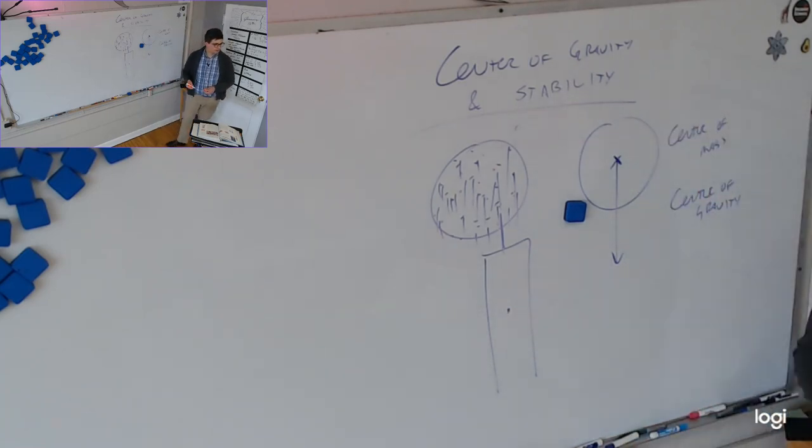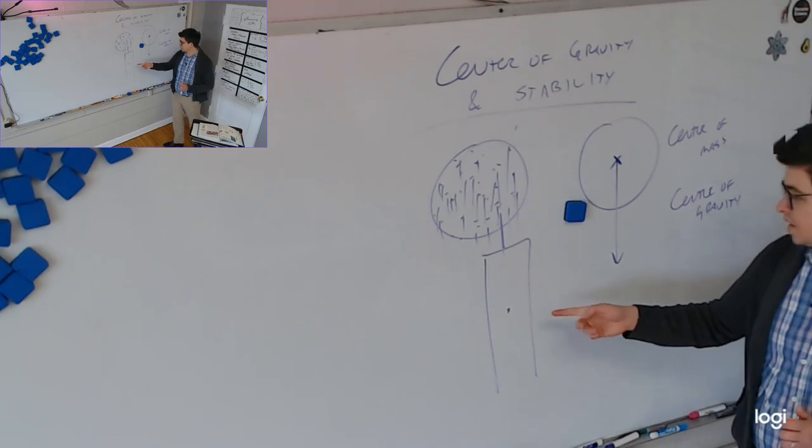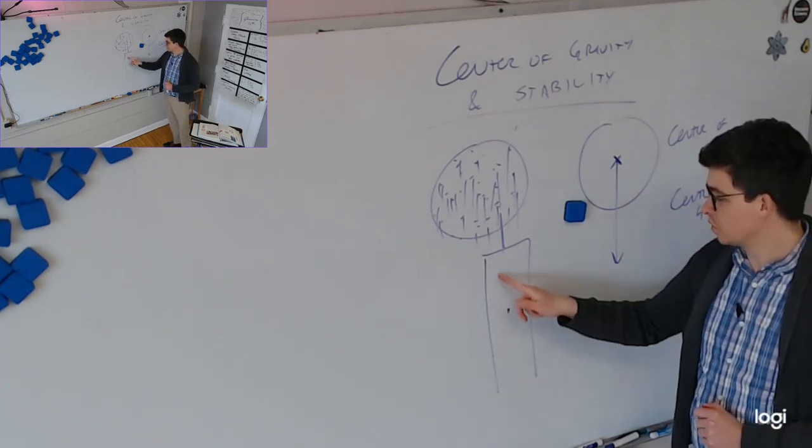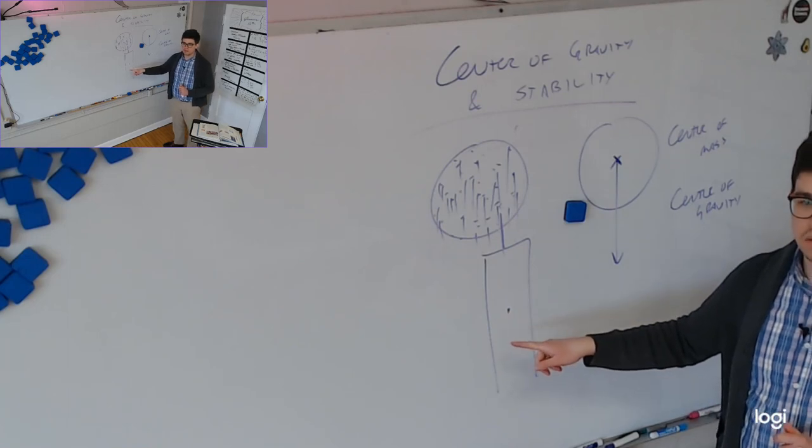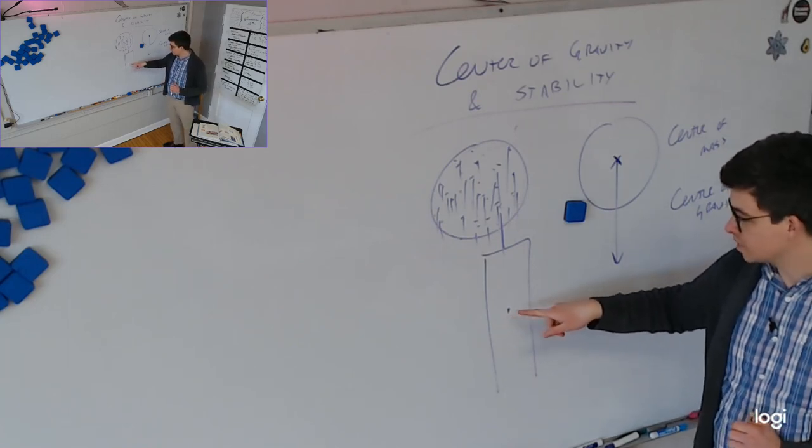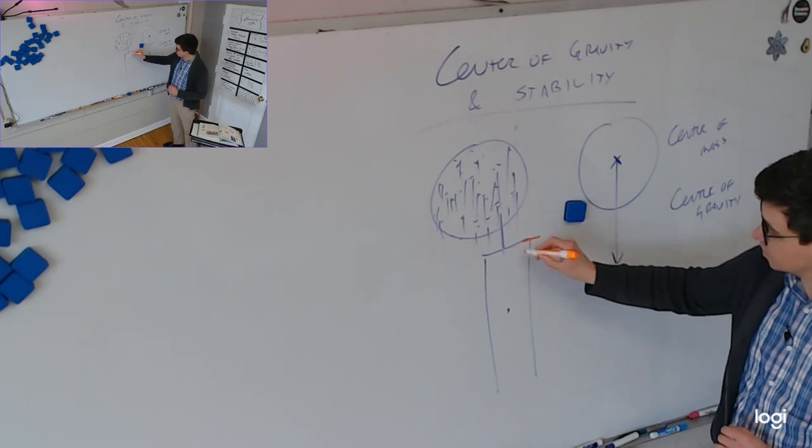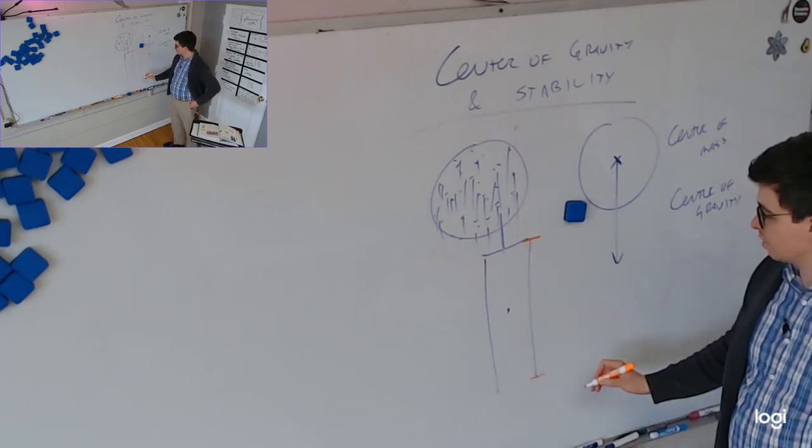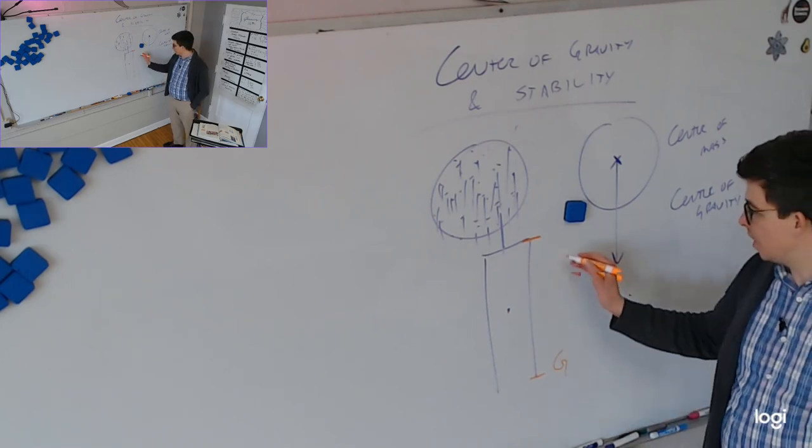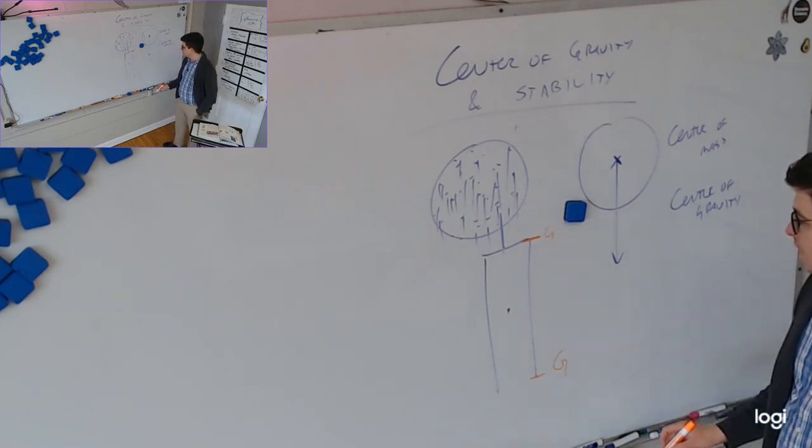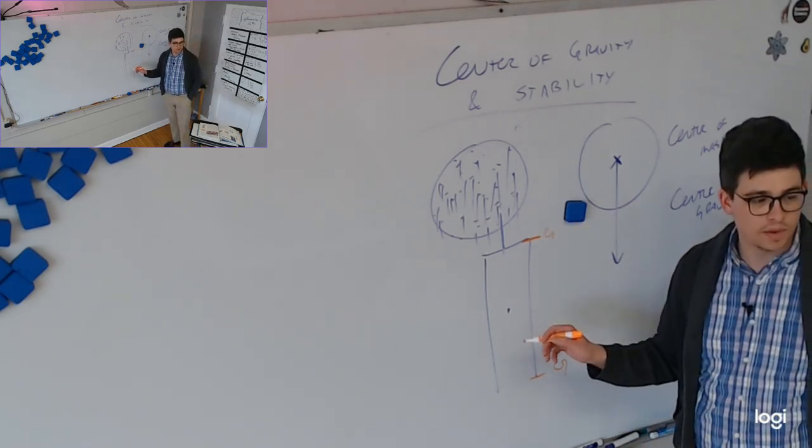The center of mass might be here, and the center of gravity might be here. Why would there be a difference? Well, the reason is that the center of mass is going to be true no matter where it is in the universe. But the center of gravity will be slightly lower, because gravity is affecting the top part of this slightly less than the bottom, so there's a tiny bit stronger g at the bottom than at the top.